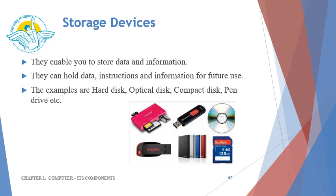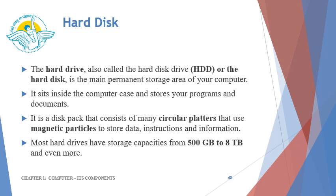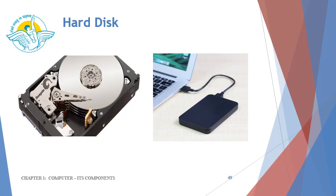Now let us see what storage devices are. They enable you to store data and information, and can hold data, instructions, and information for future use. Examples are hard disk, optical disk, compact disk, pen drives, etc. The hard drive, also called the hard disk drive or HDD, is the main permanent storage area of your computer. It sits inside the computer case and stores your programs and documents. It is a disk pack consisting of many circular platters that use magnetic particles to store data. Most hard drives have storage capacities from 500 GB to 8 TB and even more. There is also an external hard disk, which is a portable device that can be plugged into the USB port.